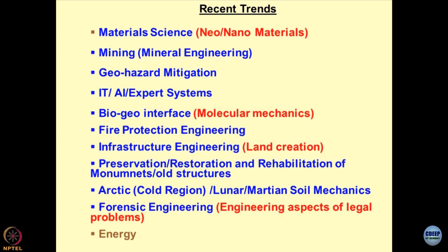Slope stability is something anyone can do, so when you come to a specialist the problems have to be different — there are many other issues beyond slope stability. Geo hazard mitigation is another area; anything related to earth is a hazard these days. There is a big boom in information technology, artificial intelligence, and expert systems in the realm of geotechnical engineering. One example is Abacus, which is a mathematical formulation. Another is NetSoilVision — the company SoilVision — whose products are expert systems.